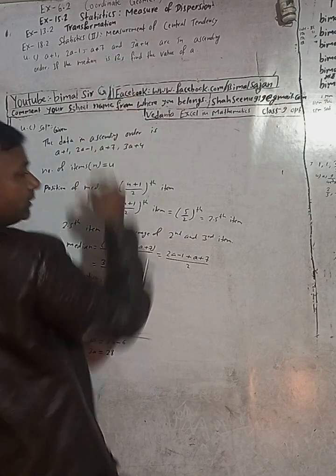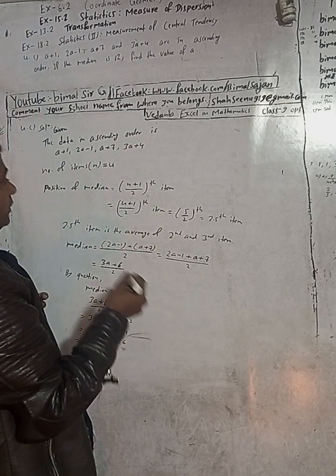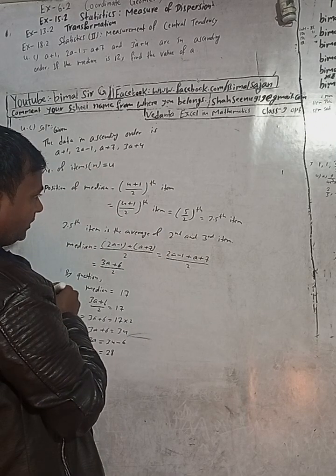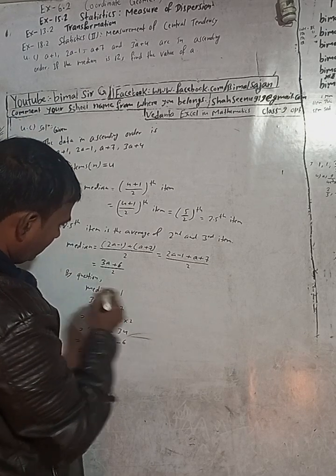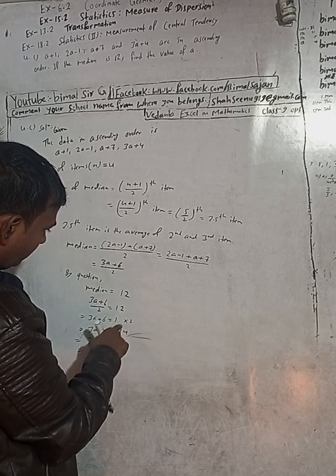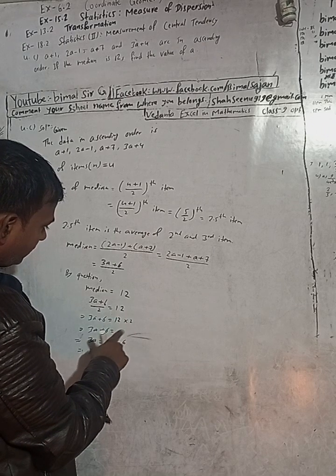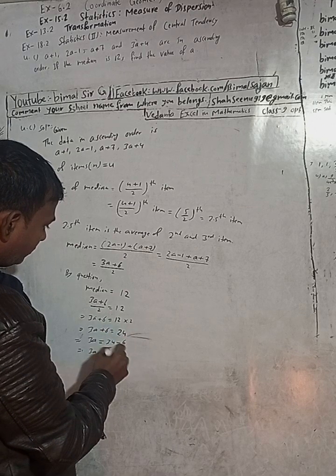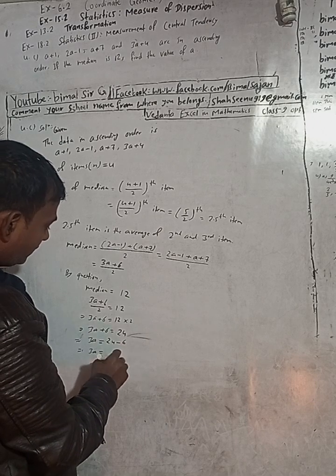In the new book, checking the problem again — the median value given is 12, not 17. Using median = 12: (3a + 6) / 2 = 12, so 3a + 6 = 24, then 3a = 24 − 6 = 18.